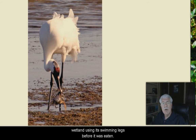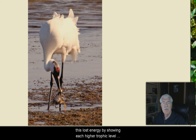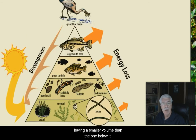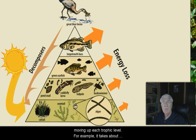An energy pyramid illustrates this lost energy by showing each higher trophic level having a smaller volume than the one below it. Most of the food energy in a food chain is lost moving up each trophic level.